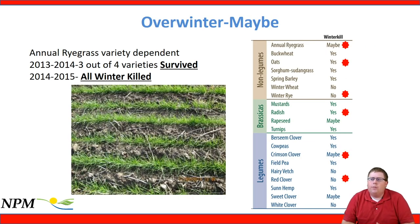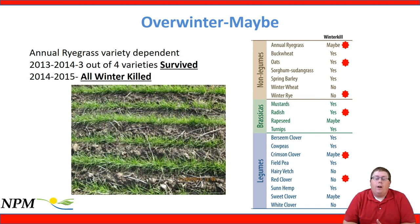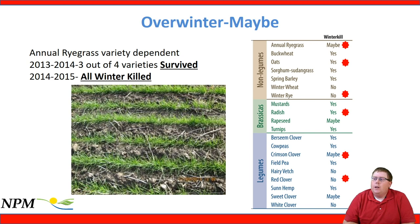Cover crops vary in whether they overwinter or winter kill. Field studies in 2013–2014 showed three out of four annual ryegrass varieties survived the winter, but in 2014–2015 all annual ryegrass winter killed. A chart of common cover crops shows: annual ryegrass may overwinter, oats will always winter kill, winter rye will always overwinter, radish will always winter kill, crimson clover may or may not winter kill depending on location in Wisconsin and winter severity, and red clover will typically always overwinter.